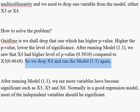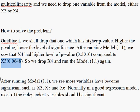We drop x4 and keep all other independent variables because x4 has a higher p-value, meaning a lower level of significance — x4 can influence y less compared to x3. x3 can influence y more than x4 because x3 has a lower p-value. When the p-value is less than five percent, that variable is significantly explaining the dependent variable y.